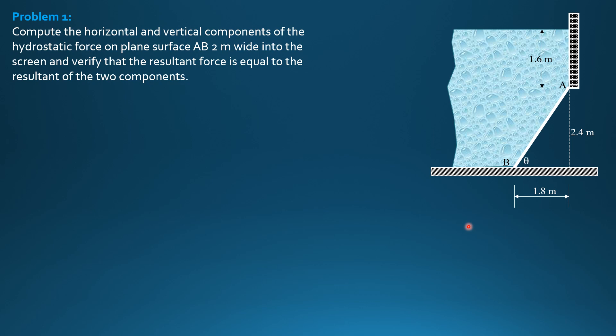So locating the angle, calling this as theta, and length of AB: square root of 1.8 squared plus 2.4 squared is 3 meters. So therefore, this is a rectangular gate AB, 2 meters wide into the screen by 3 meters high or length.